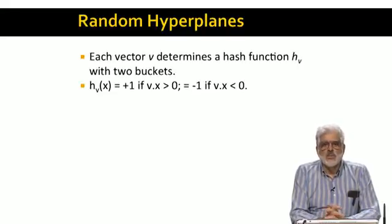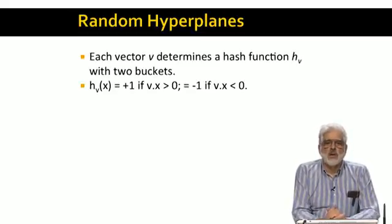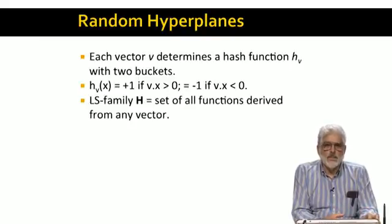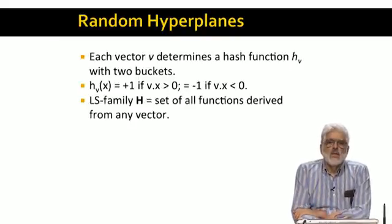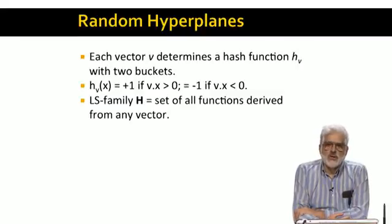In a vector space with a real value of dimensions, the probability of this happening is essentially 0. But to be precise, we should state something to do when the dot product is 0. Say, put x in the plus 1 bucket. The LSH family is all the functions h sub v. Remember that really, h sub v is a function that takes two vectors x and y and says yes or no.